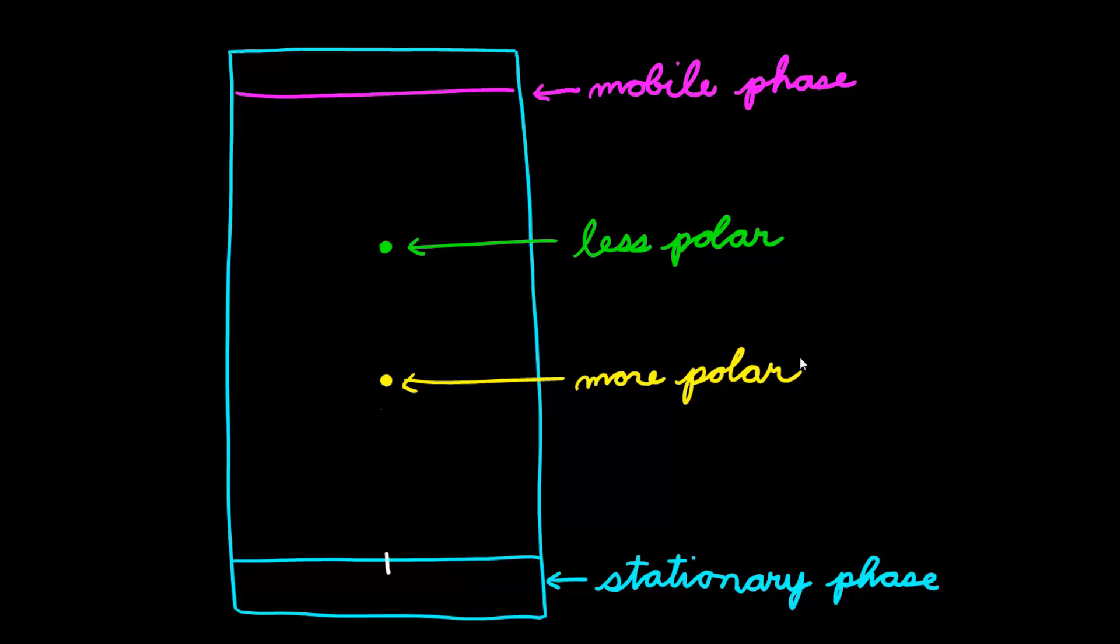If the spot did not travel as much, this means that it was more attracted to the stationary phase, and hence was more polar.